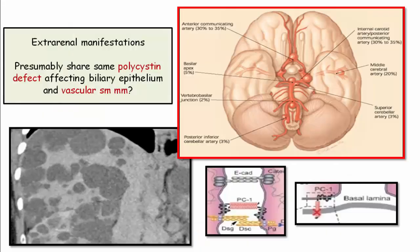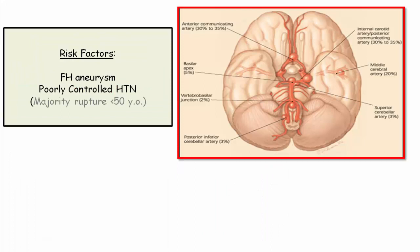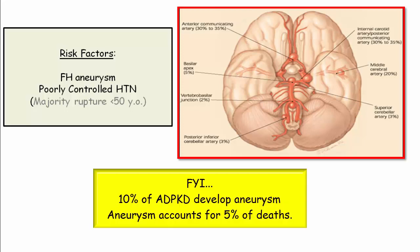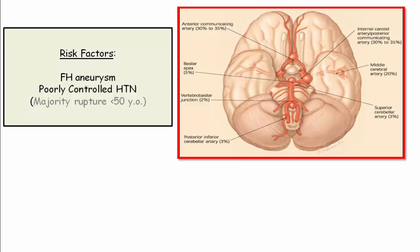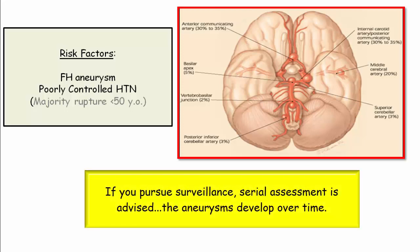Cerebral aneurysms are the big ticket item for autosomal dominant PKD. The USMLE likes to describe a patient with manifestations of autosomal dominant disease and ask which comorbid condition exists or is likely to occur. Whatever defect exists in the kidney accounting for cyst development is also present in the liver and presumably in the vascular smooth muscle. The highest risk for aneurysm formation includes those with a family history of aneurysm and/or poorly controlled hypertension. Approximately 10% of patients with PKD develop aneurysms, accounting for about 5% of deaths in PKD patients. There is no single gold standard for screening, but serial assessment should be considered — a one-time screen does not mean a patient will remain free of aneurysm formation.